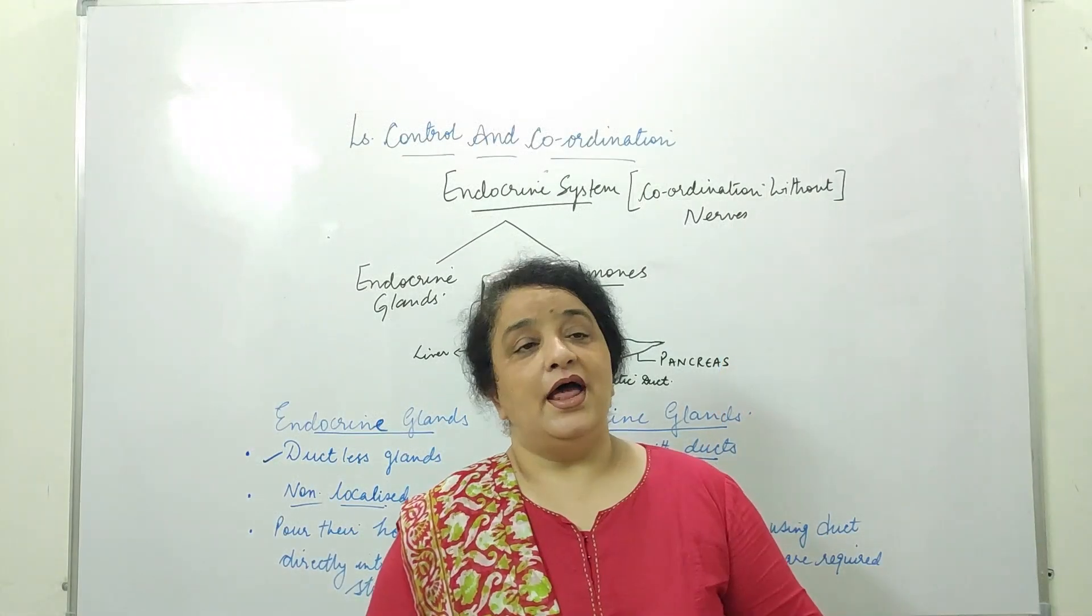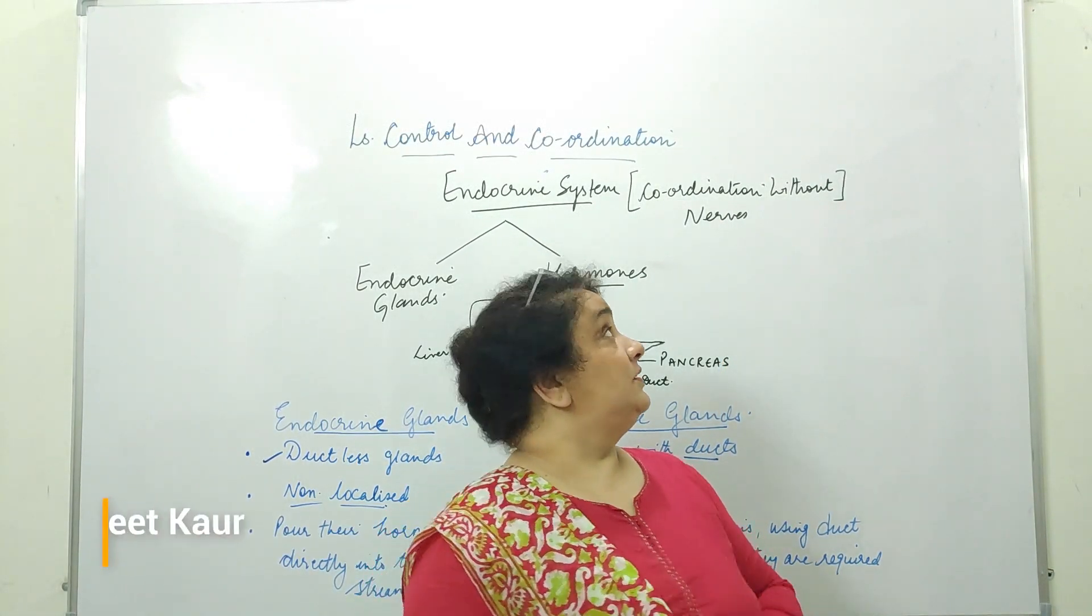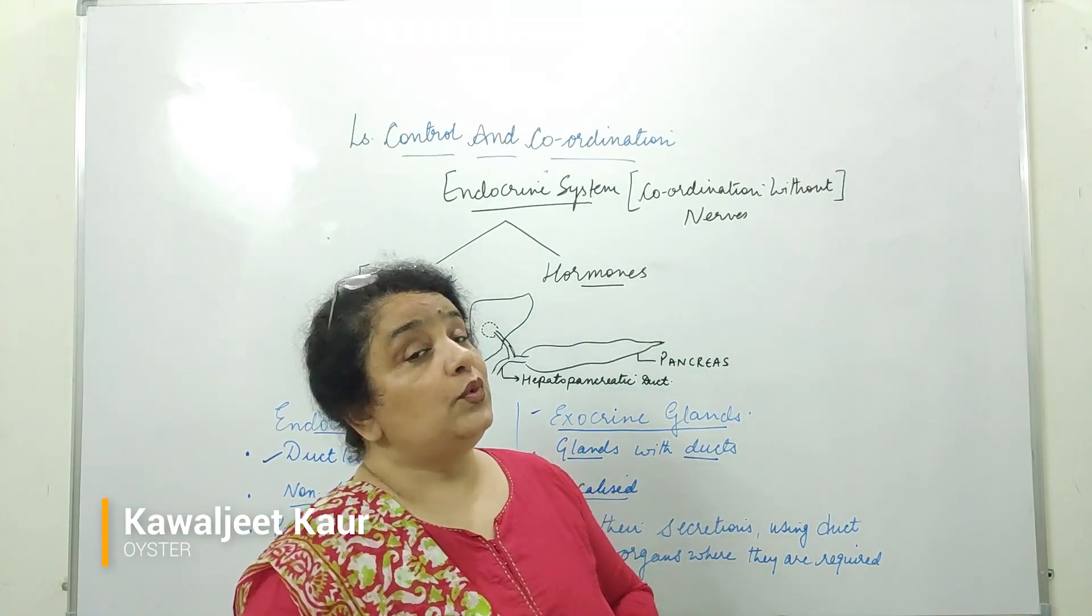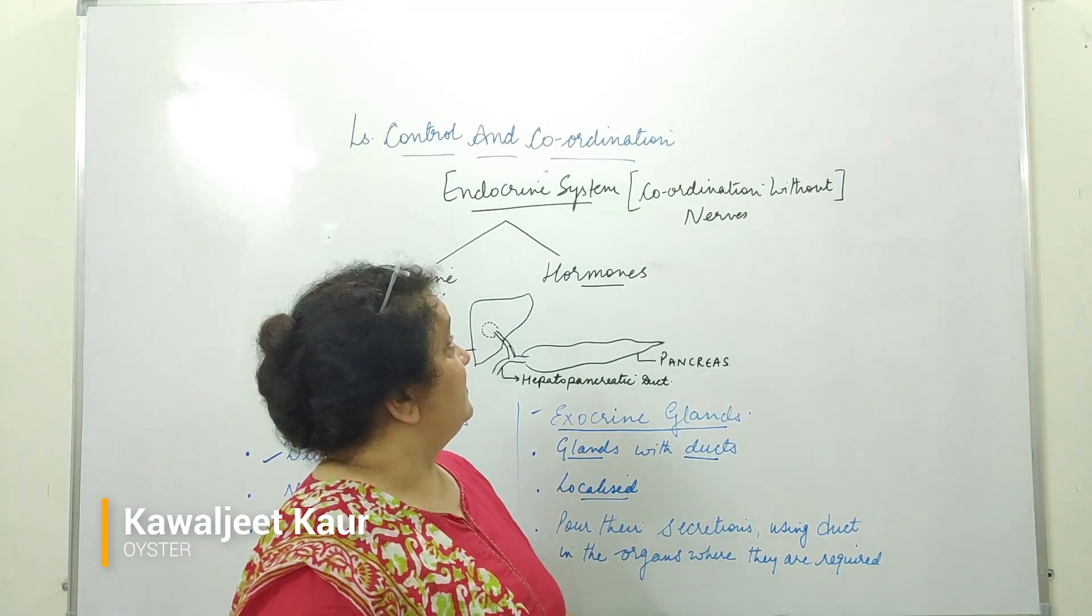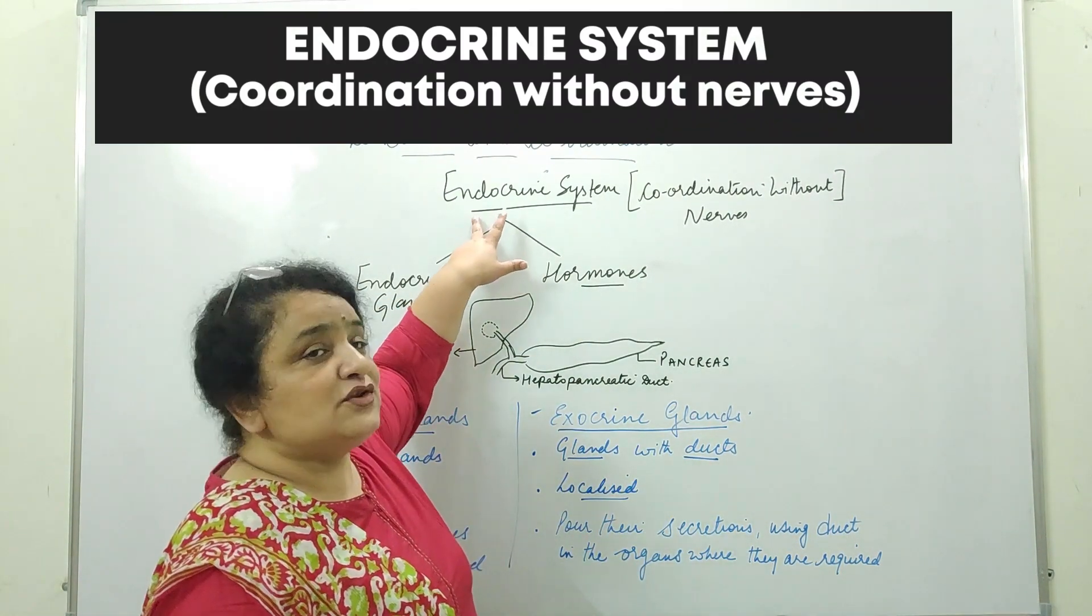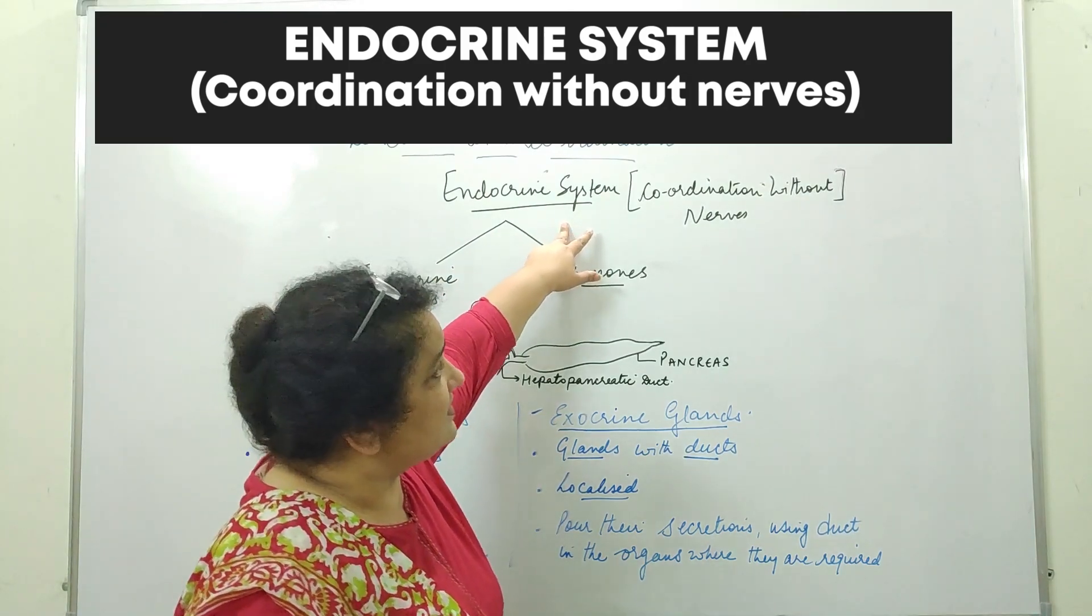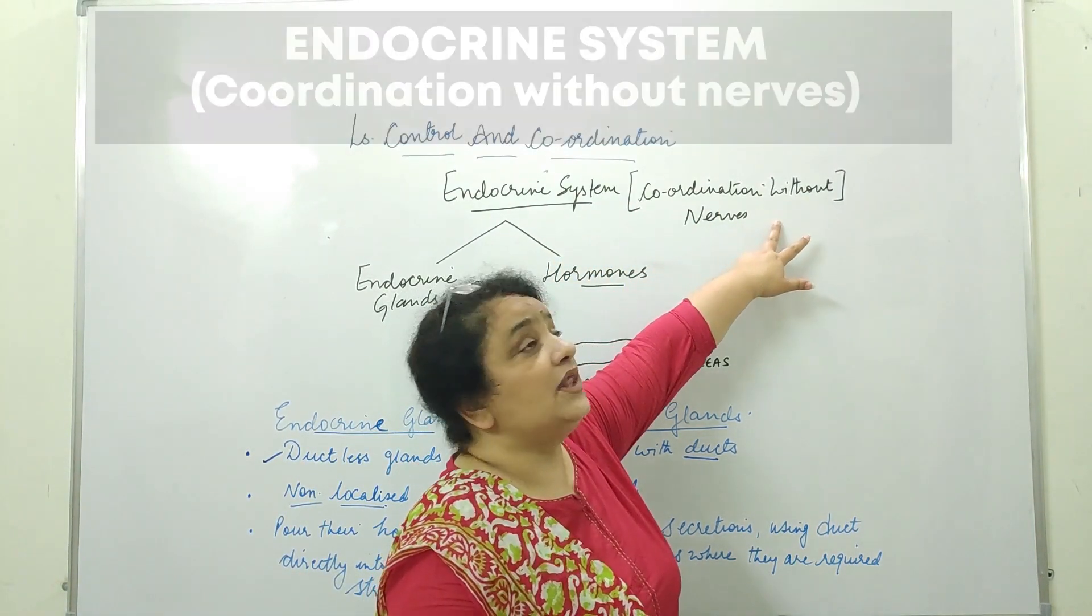Hello everyone, now we are again here to learn control and coordination with the next part and this next part is the endocrine system that is the coordination without nerves.